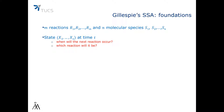Let's assume that we have M reactions R1, R2, all the way to Rm, and N molecular species S1, S2, through Sn. Given that the system is in state X1 through Xn at time t, we need to answer two questions in order to simulate the evolution of the system: when will the next reaction occur, and which reaction will it be?